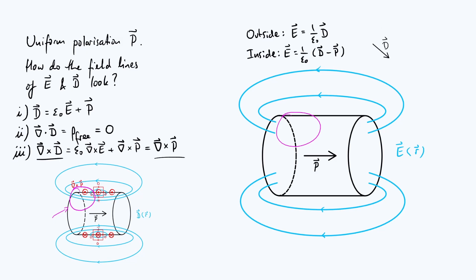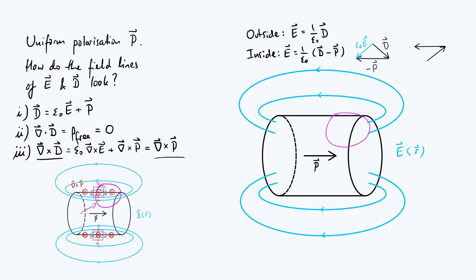We subtract P from D — equivalently, we add the vector −P. Since P points to the right, −P points to the left. Doing vector addition from the tail of D to the head of −P, the resulting E vector points in a new direction. Repeating this on the right side of the interior, where D points up and to the right, vector addition with −P gives E pointing up and to the left.